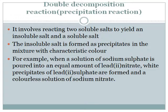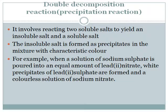The double decomposition reaction, which is also referred to as precipitation reaction, involves reacting two soluble salts to yield an insoluble salt and a soluble salt. The insoluble salt is formed as precipitate in the mixture with a characteristic color. For example, when a solution of sodium sulfate is poured into an equal amount of lead-2 nitrate, white precipitates of lead-2 sulfate are formed, and a colored solution of sodium nitrate is also formed.